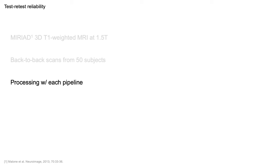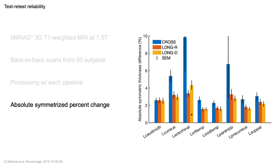To assess test-retest reliability, we analyzed T1-weighted structural scans from the Myriad dataset. These were back-to-back scans from 50 subjects, where repeat scans were not contingent on subject compliance. We processed each subject with each of the pipelines and summarized cortical thickness differences between the first and the second scan as absolute symmetrized percent change. We found the thickness differences obtained with the deformable template to be similar to the standard longitudinal stream, that is typically in the range of 2-4%.